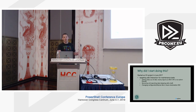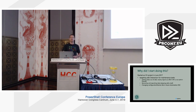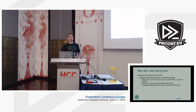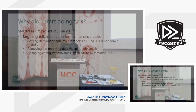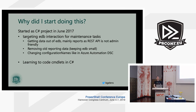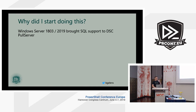I was targeting EDB interaction for maintenance tasks — the main thing was removing all reporting data, but also getting data out of the EDB, like which nodes do I actually manage. There's no way to properly expose that through the REST API. I also wanted to do things like within Azure Automation DSC — change the configuration name on the server side instead of the client — without doing a re-registration. Just go into the database and say 'from now on you're using this configuration.' And I also wanted to learn to code cmdlets in C#, so it was a pet project. Then Microsoft introduced SQL support in Server 1803 and 2019.